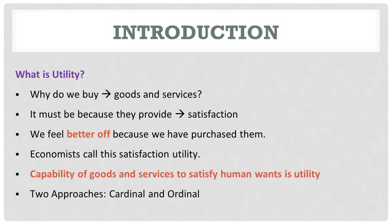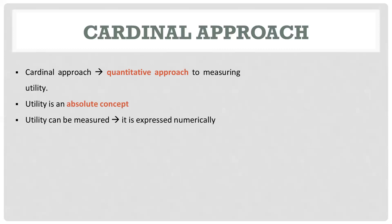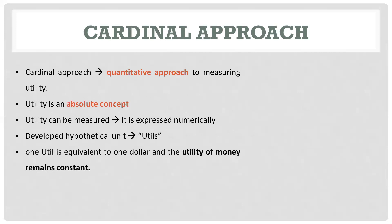We have two approaches to analyze utility: one is the cardinal approach and another is the ordinal approach. The cardinal approach is the quantitative approach to measuring utility. They consider utility as an absolute concept — that means utility can be measured and expressed numerically.